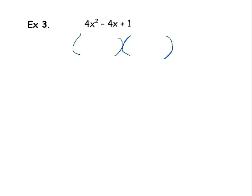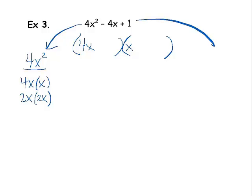So I'm going to try different things that multiply to 4x squared. What multiplies to 4x squared? 4x times x, 2x times 2x. So I have a choice. Let's try 4x and x. So the other side of it is what multiplies to 1. 1 times 1, negative 1 times negative 1.